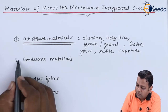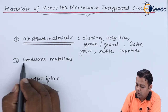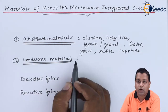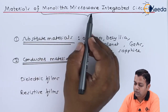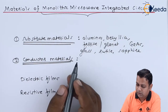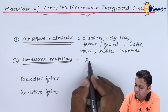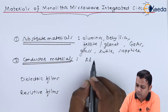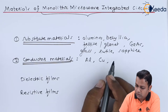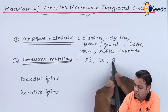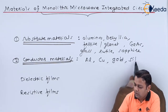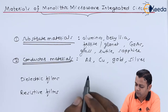For the second category, conductor materials are also required for producing monolithic microwave integrated circuits. The choices for conductor materials are aluminium, copper, gold, and silver.